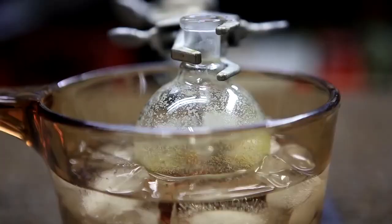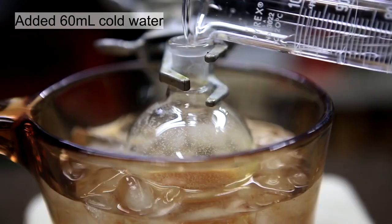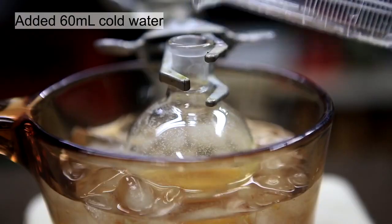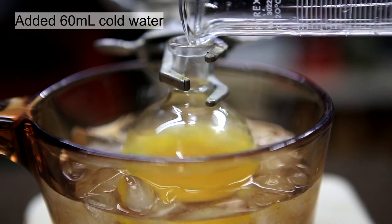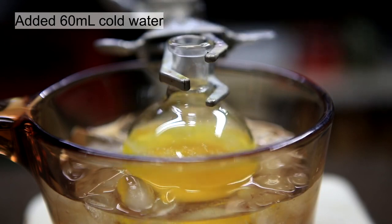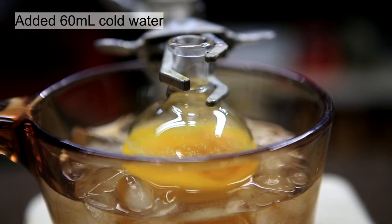After one and a half hours, it's placed on an ice bath and cooled to about zero degrees Celsius. Then, about 60 milliliters of ice cold water is added. This will cause the picric acid to precipitate from the solution, and a very nice yellow color will arise.